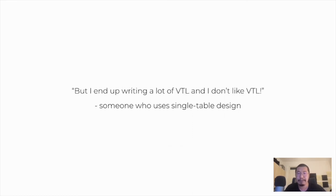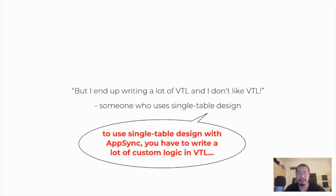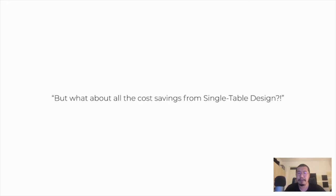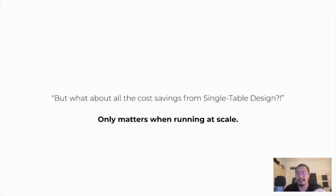When you use single table designs with AppSync, you end up writing a lot more custom VTL code because you have to construct special PKs and SKs and split the data in the response template. Advocates for single table design might say it's worth it for cost savings — fetching multiple entities with a single query is cheaper than multiple get item requests to different tables, which is true. But those cost savings tend to amount to very little. At Amazon's scale running millions of requests per second, the savings are huge and it absolutely makes sense. But for most applications, the engineering time cost of working with single table design far outweighs any DynamoDB cost savings.